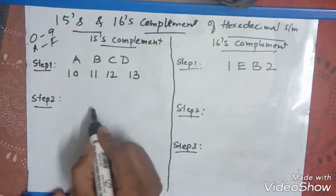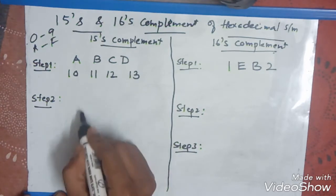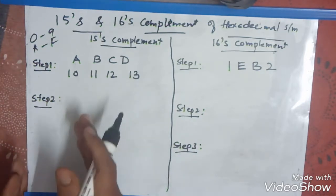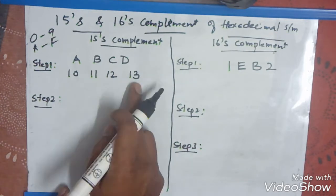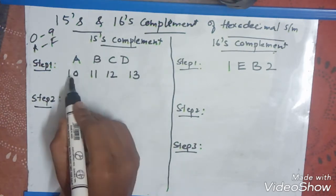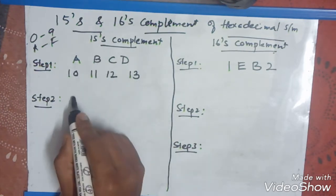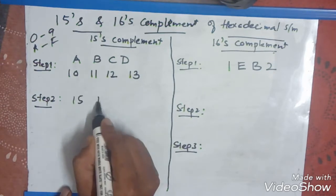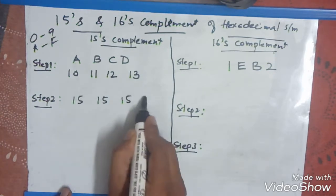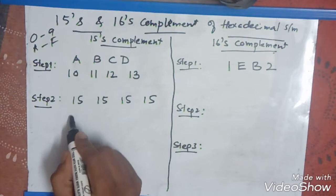Now, you can write down this number like this. First of all, what we have to do is you have to subtract these individual numbers with 15. Write down. How many digits you have? 1, 2, 3, 4. So, 4 times you will write 15. 1, 2, and 3, 4. Write down these numbers below this number.